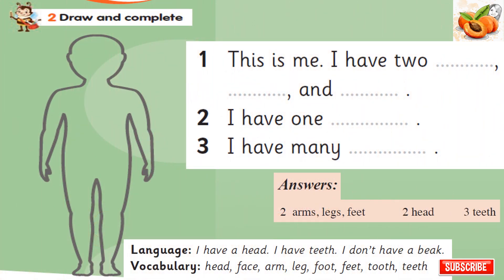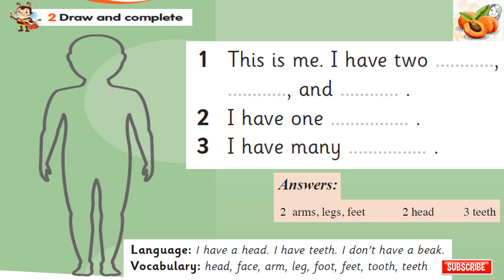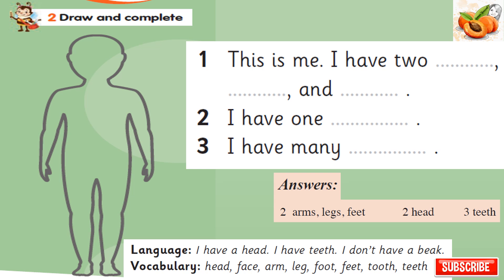Draw and complete. 1. This is me. I have two arms, legs, and feet. 2. I have one head. 3. I have many teeth. I have a head. I have teeth. I don't have a beak.